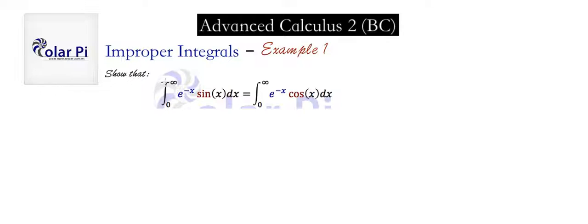The task is to first show that this improper integral on the left is equal to this improper integral on the right, and then we have to find the value. To start, what we're going to do is write our improper integral as a limit — replacing infinity with b and sending the limit as b goes to infinity. You have to always rewrite your improper integral involving a limit like this.